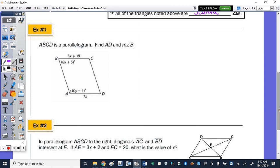So it says below that, in example 1, that ABCD is a parallelogram. Find the length of AD in the measure of angle B. So let's take a look at the sides that are given. I know that AD is 7x, its length, and the length of BC is represented by 5x plus 19.